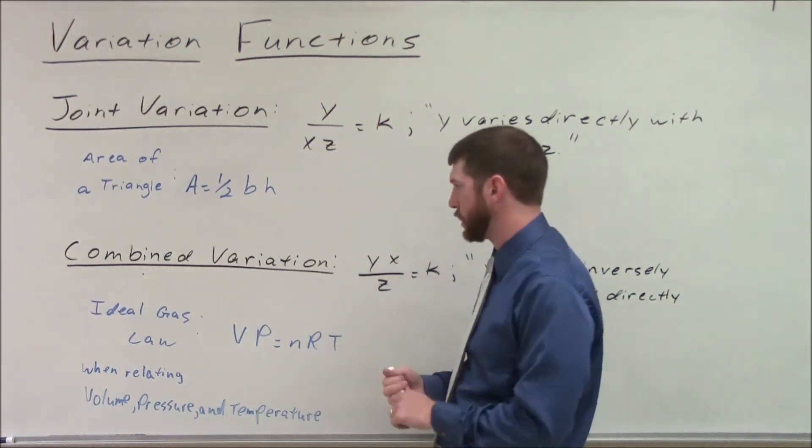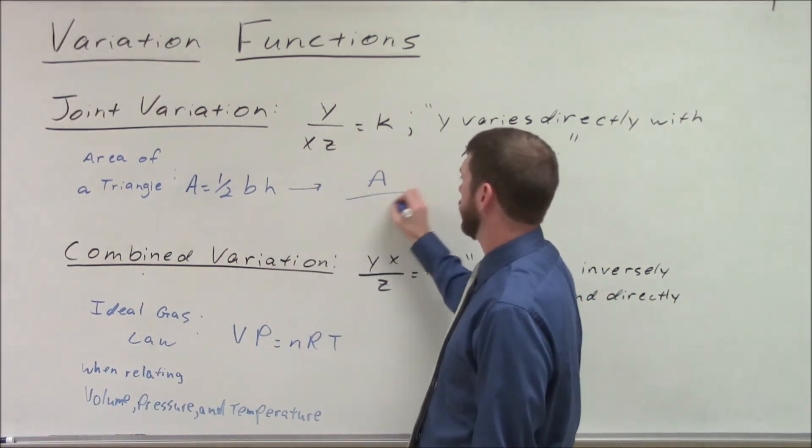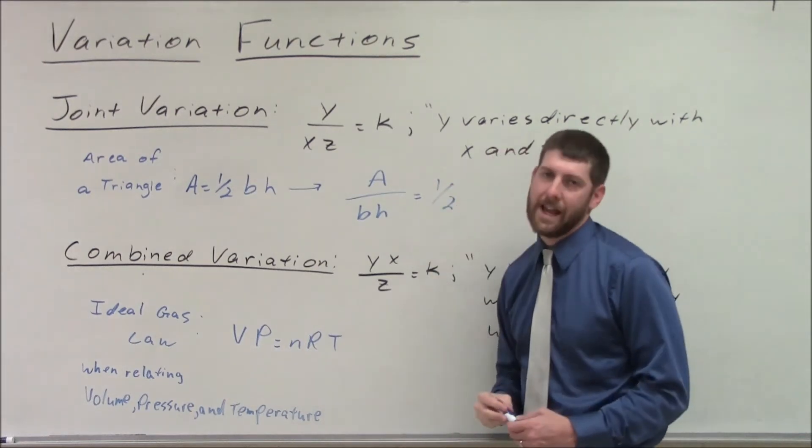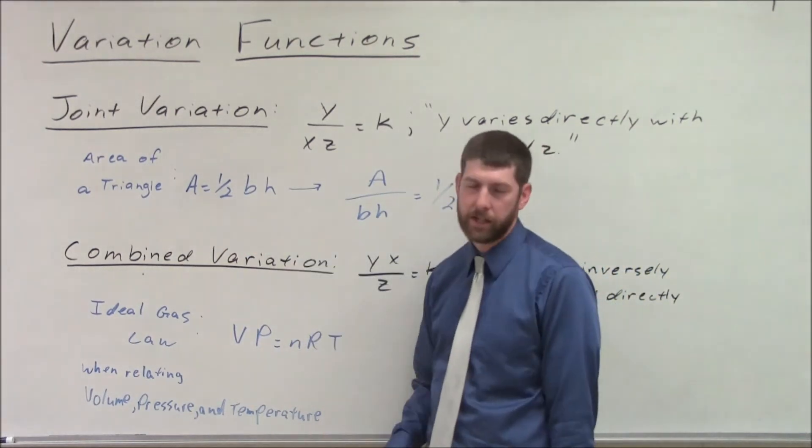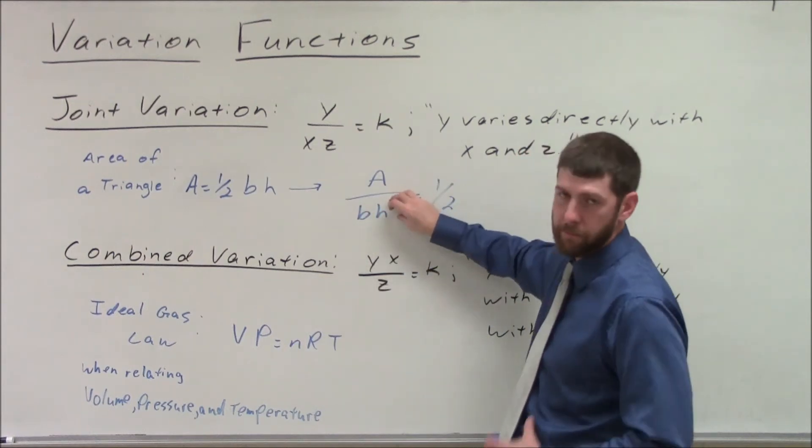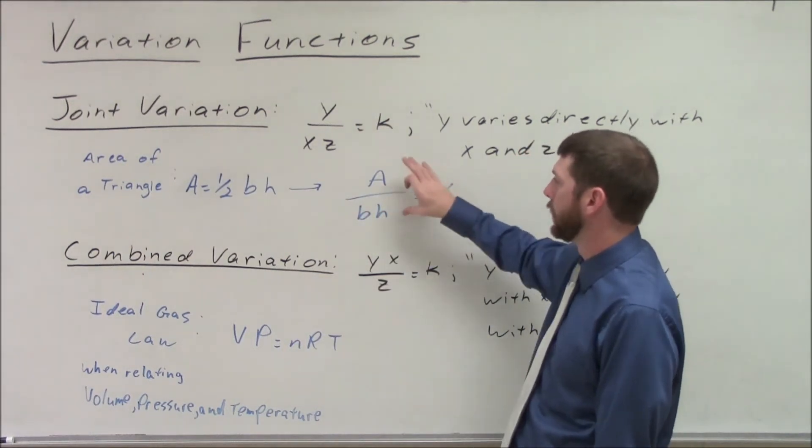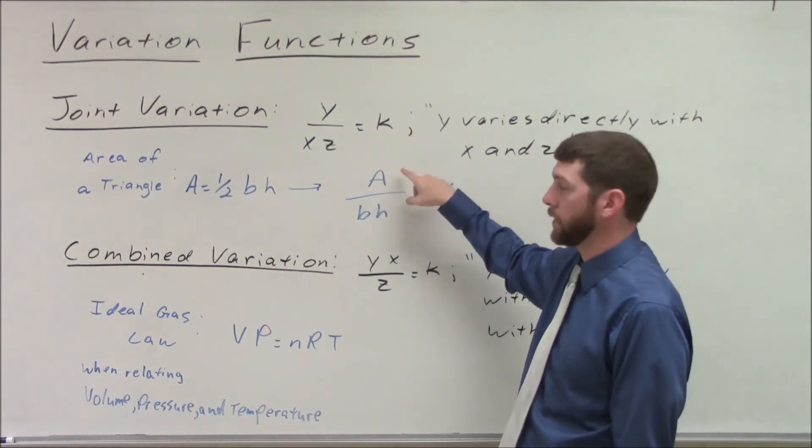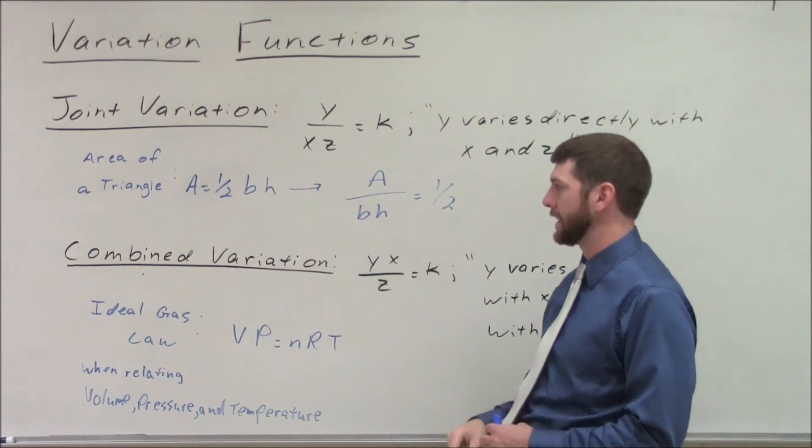An example of that is an area of a triangle. The relationship between area and the product of the base and the height, since that always has to equal a half, you just divide the bh over. Since this ratio of area to base times height is always a half, then we can say that the area is directly related, or directly varies with both the base and the height.